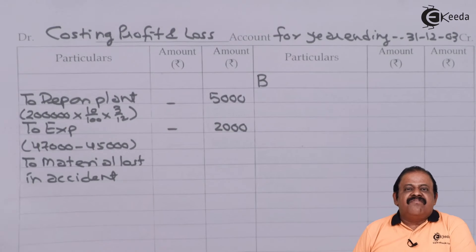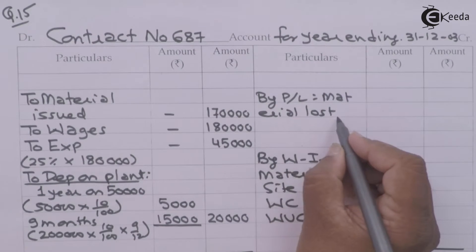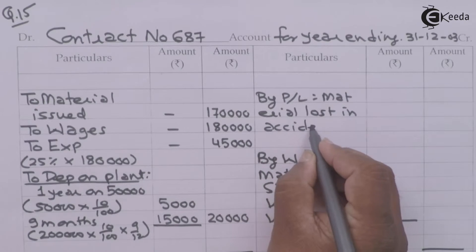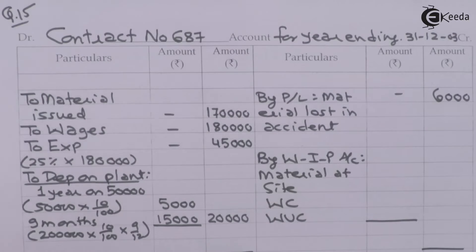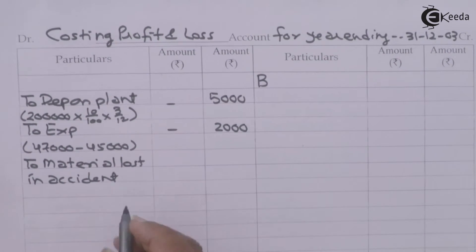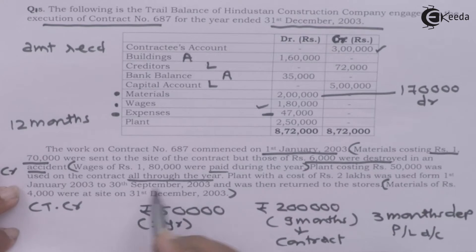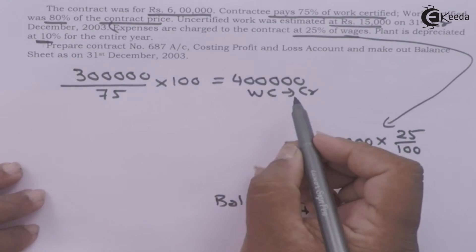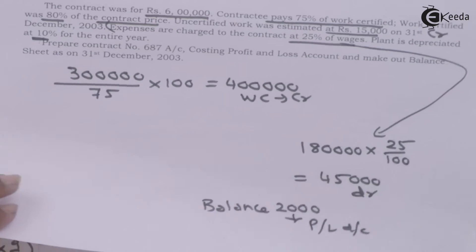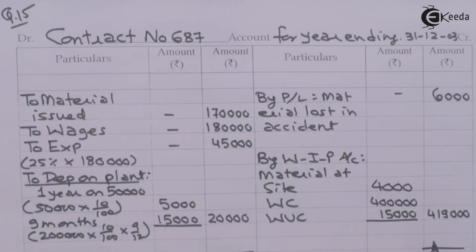Total depreciation chargeable to the contract is 20,000. Material lost in accident of 6,000 is credited to the contract account and debited to profit and loss account. Material at site (closing stock) of 4,000 is credited to the contract account. Work certified of 4 lakhs and uncertified work of 15,000 are credited, giving total work in progress of 4 lakhs 19,000.